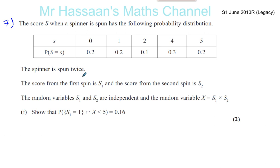The spinner is spun twice. The score from the first spin is S1 and the score from the second spin is S2. The random variables S1 and S2 are independent, and the random variable X is S1 times S2 — you see what you got on the first spin and the second spin, multiply them together, and that gives you X.